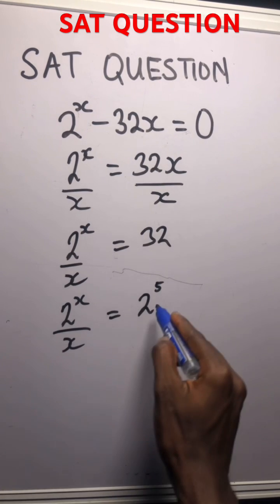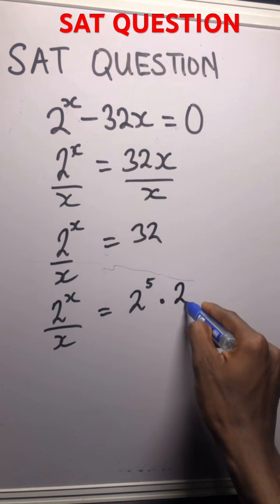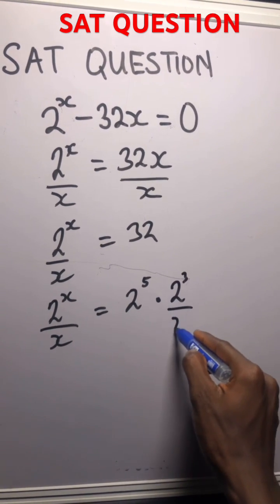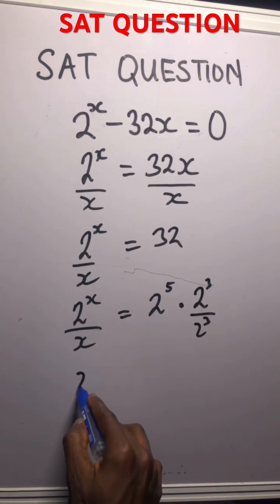So we got to do times 2 to the power of 3 over 2 to the power of 3. Now we got,